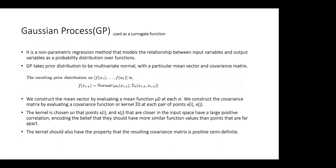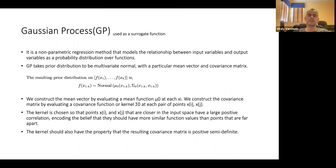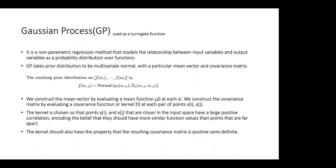Bayesian optimization uses Gaussian Process Regression as the surrogate function. For the initial set of points, we define a prior by throwing random points from the domain of hyperparameters. The prior is defined using a mean and a kernel — the kernel is just a covariance matrix. To find a new hyperparameter, there are various approaches, and what they try to do is exploration: pick points where we are most uncertain.